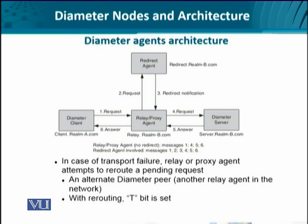Let's look at the relationship between the client and server, realized through a series of agents. We have the Diameter client with Realm A and the server with Realm B. The request is initiated from the client, numbered one through six. When no redirection is involved, the message goes simply from the client to the server via either a relay or proxy agent — from one realm to the other in a straightforward manner.